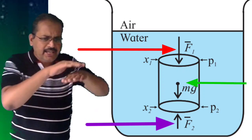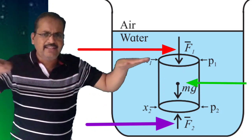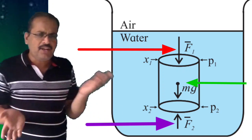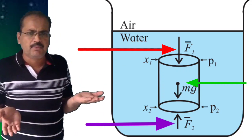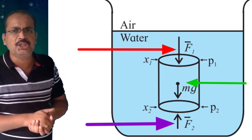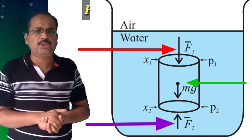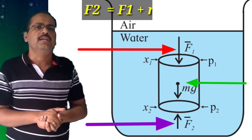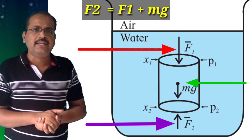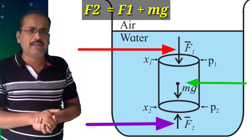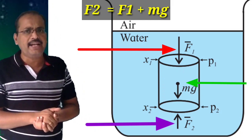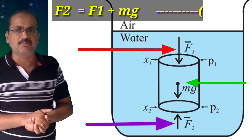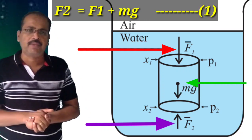If the liquid is in static equilibrium, the forces are balanced. Therefore F2 is equal to F1 plus MG, since F1 and MG act in the same direction. This is equation number 1.